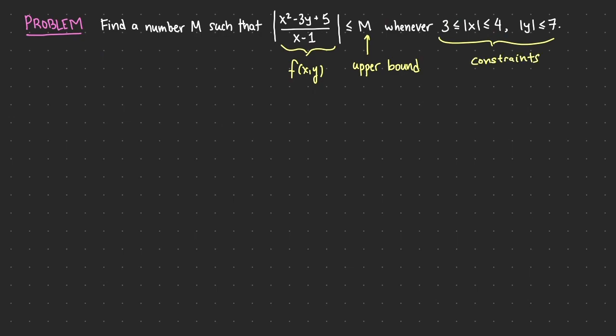You might be concerned about the x minus 1 in the denominator causing division by zero. But actually, division by zero only happens when x equals 1, and that doesn't fall within the given constraint. So there's no division by zero. The key ingredient to this problem is the triangle inequality.